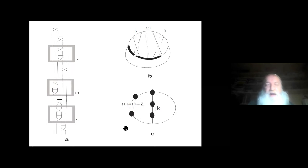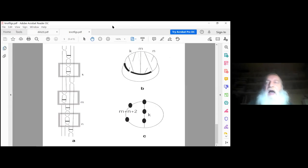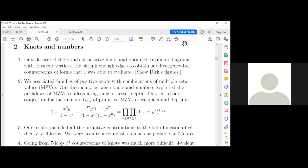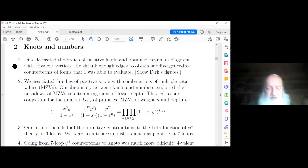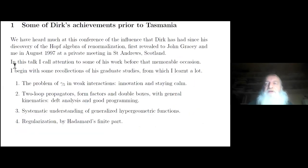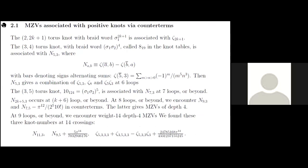Okay, so now let me get out of there. And I should be back in my talk. So, we associated families of positive knots with combinations of multiple zeta values.